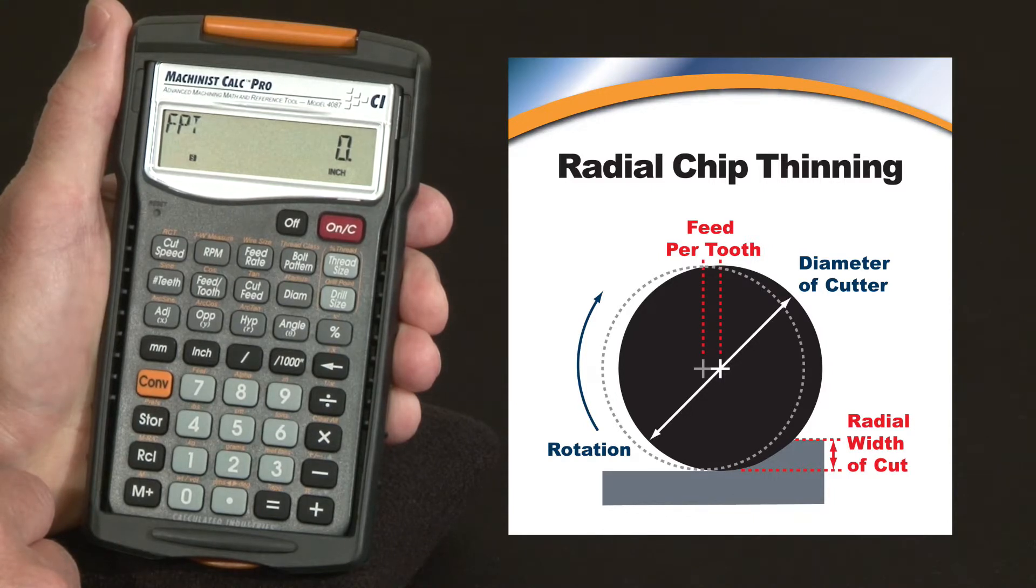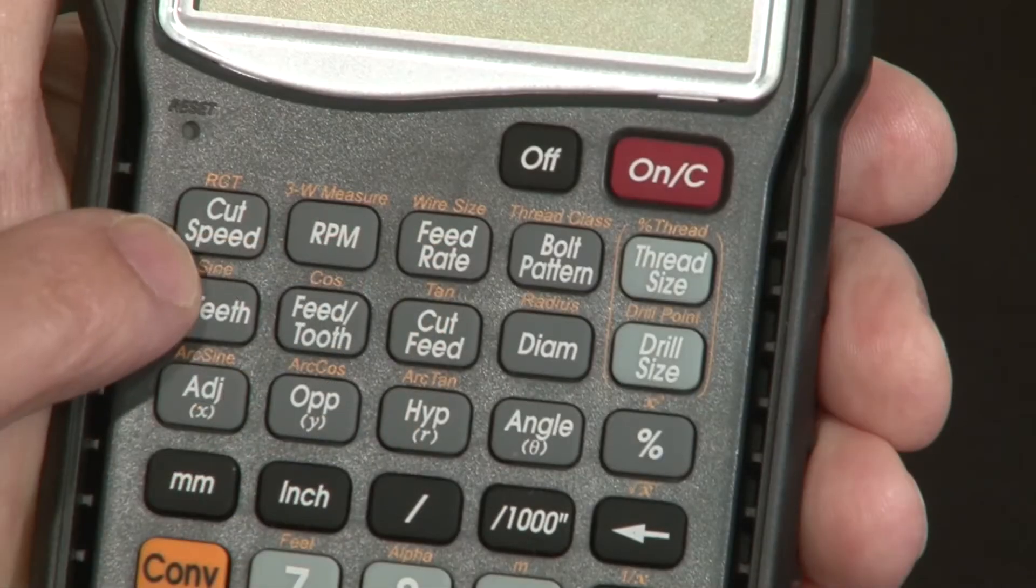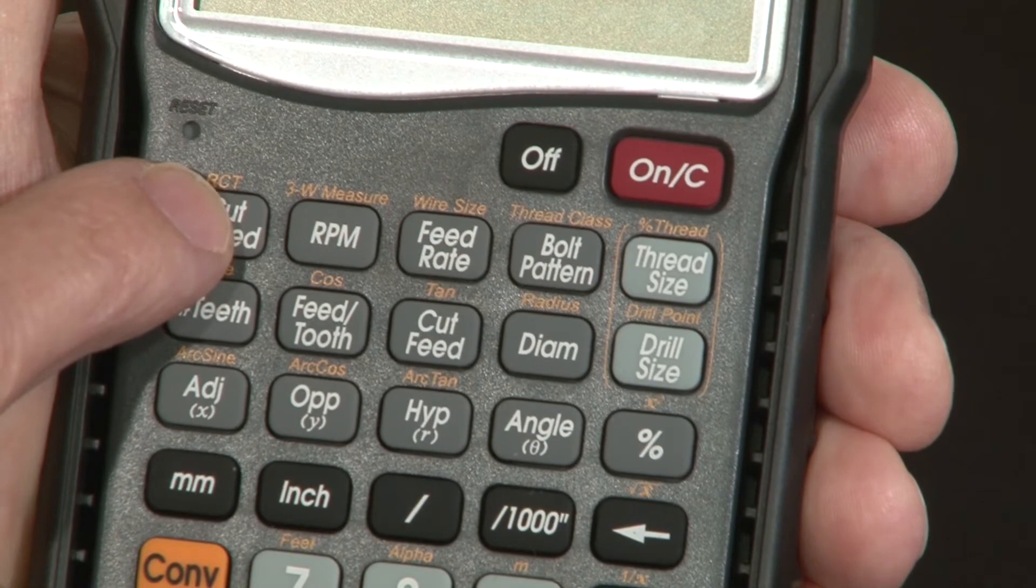On our latest models, we've added a new feature for radial chip thinning. The way you can tell if your model has this feature is right here, above the cut speed key, it says RCT.